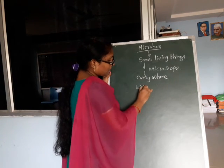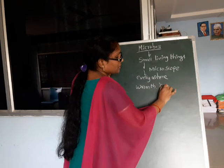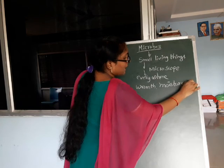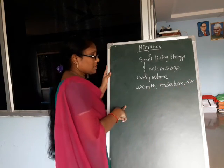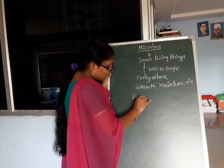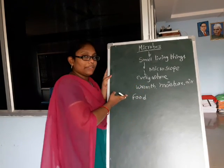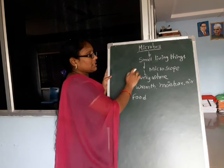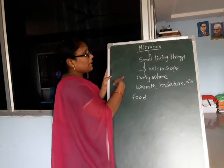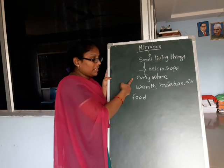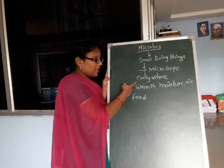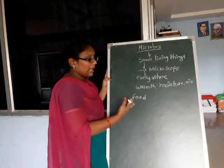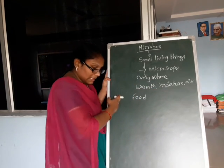Microbes grow rapidly in warm places, moisture, and where there is food. In light, warm places, moist places, with food — everywhere they grow rapidly.